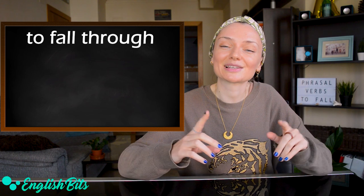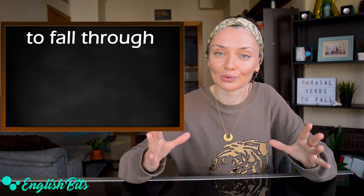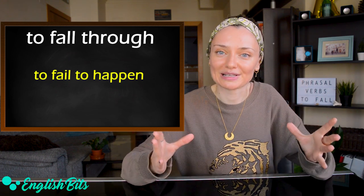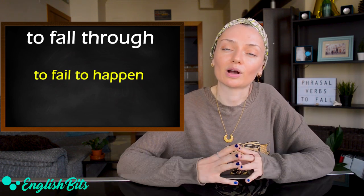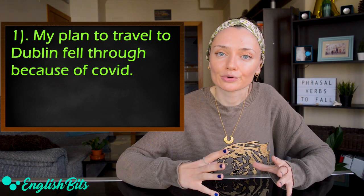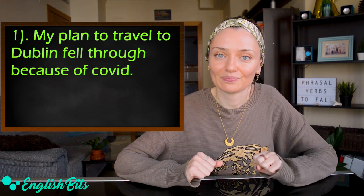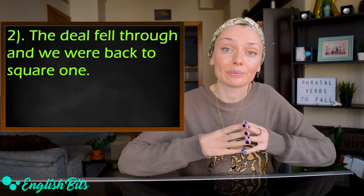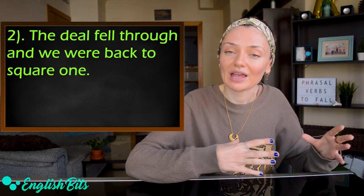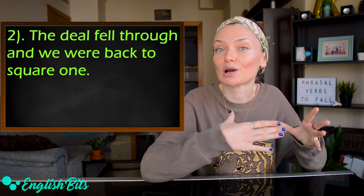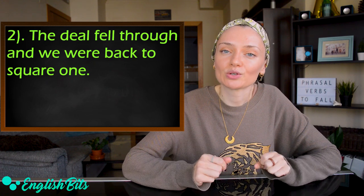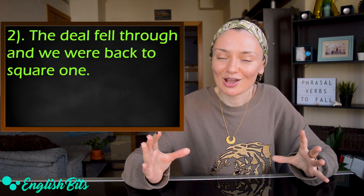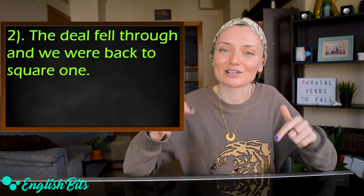And last but not least, to fall through. It means to fail to happen. For example, my plan to travel to Dublin fell through because of COVID. And the last example: the deal fell through and we're back to square one. If you want to know what to be back to square one means, check out my lesson on 10 idioms about new beginnings. You can find the link to this lesson in the description box.